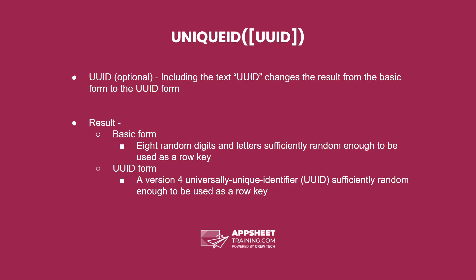The result in the basic form is 8 random digits and letters, sufficiently random enough to be used as a row key. This is in all likelihood what you are going to want to do for your apps for your key columns. The UUID form is a version 4 universally unique identifier, sufficiently random to be used as a row key, but this is only needed in specialty situations.